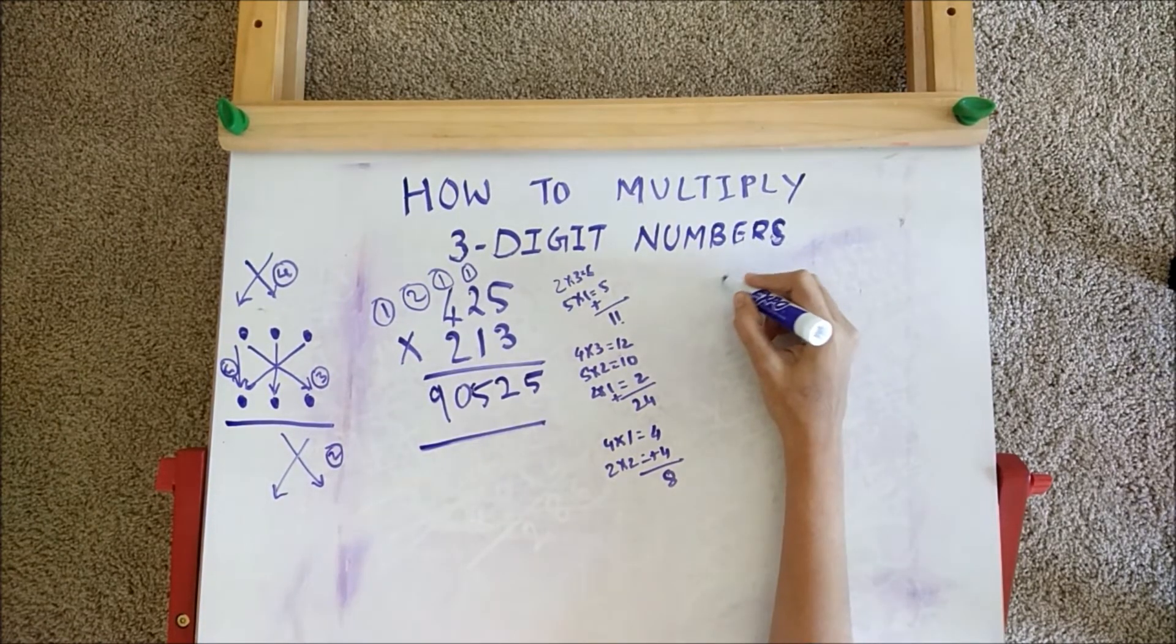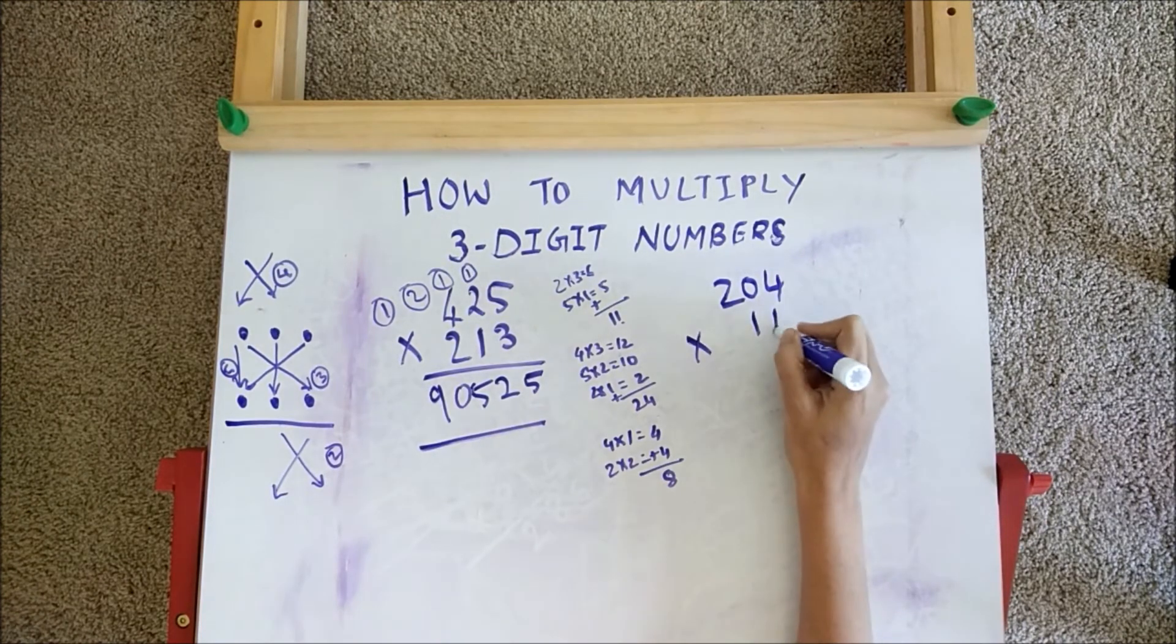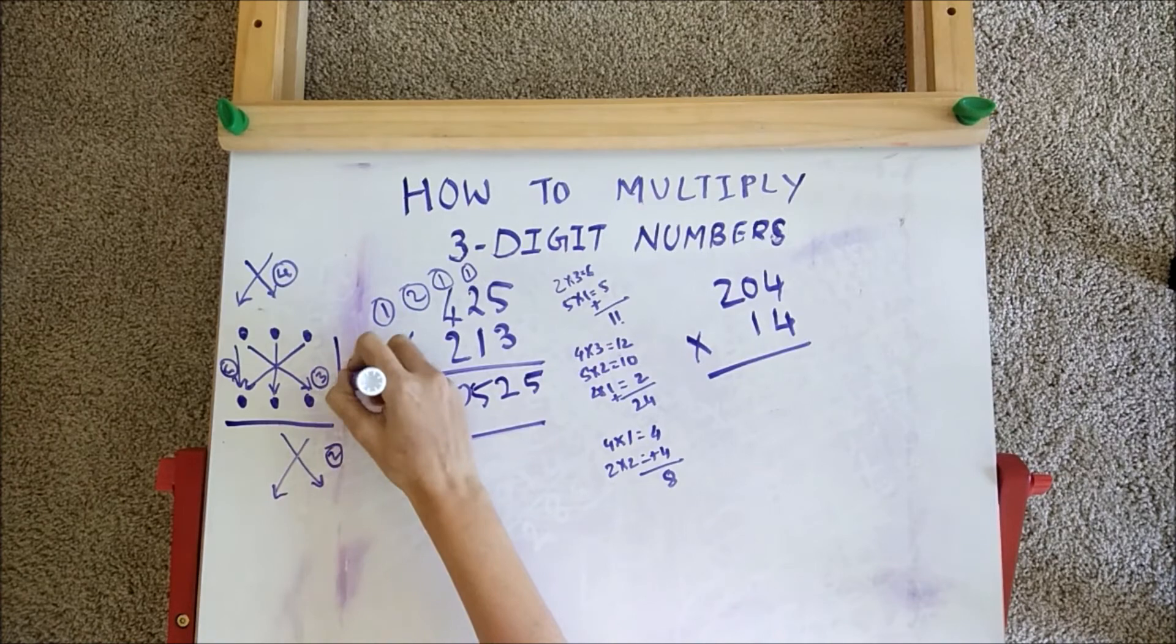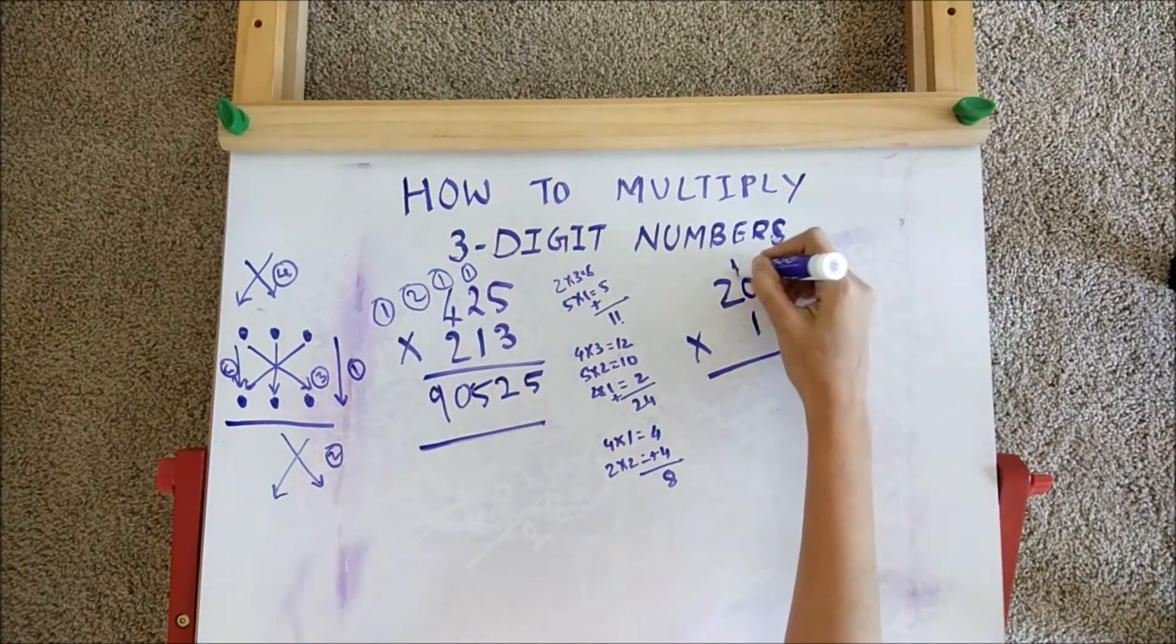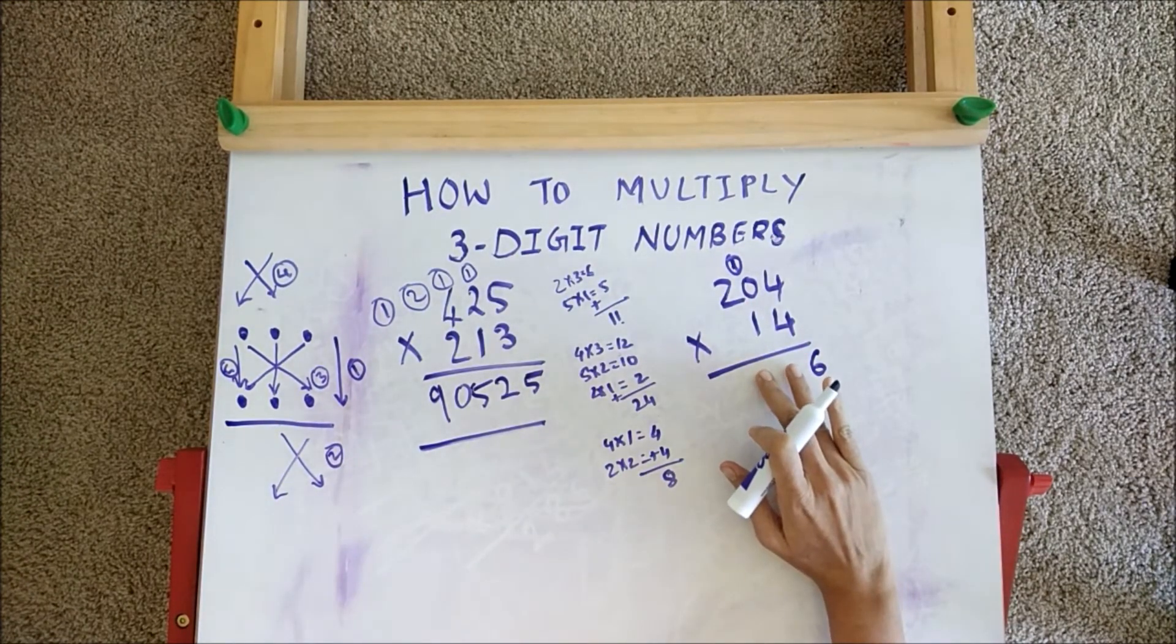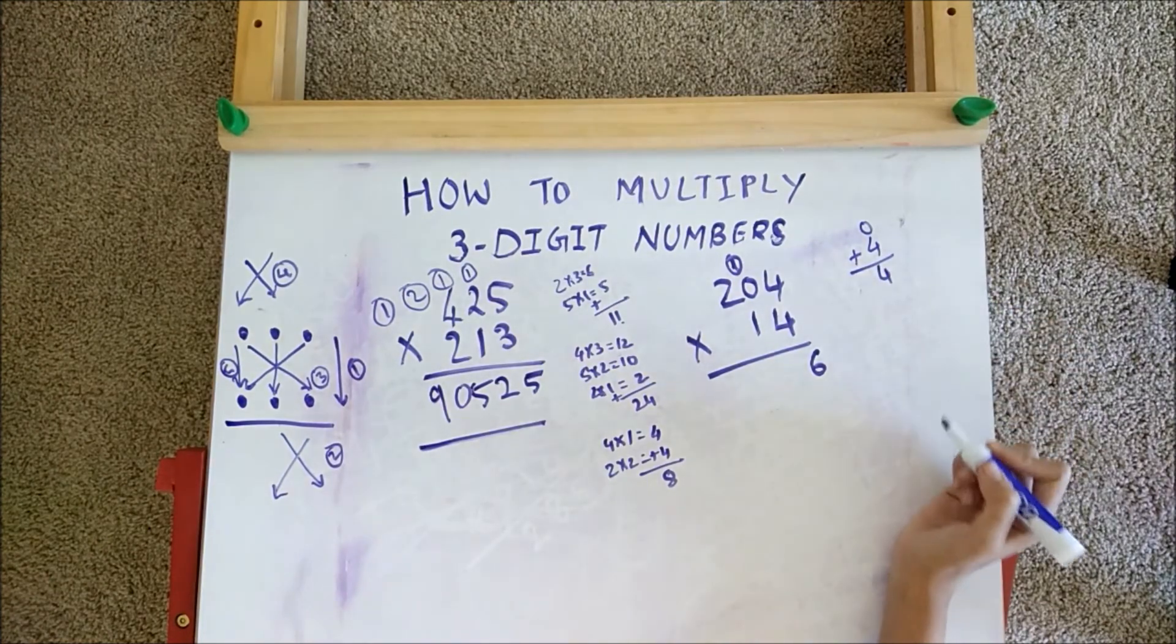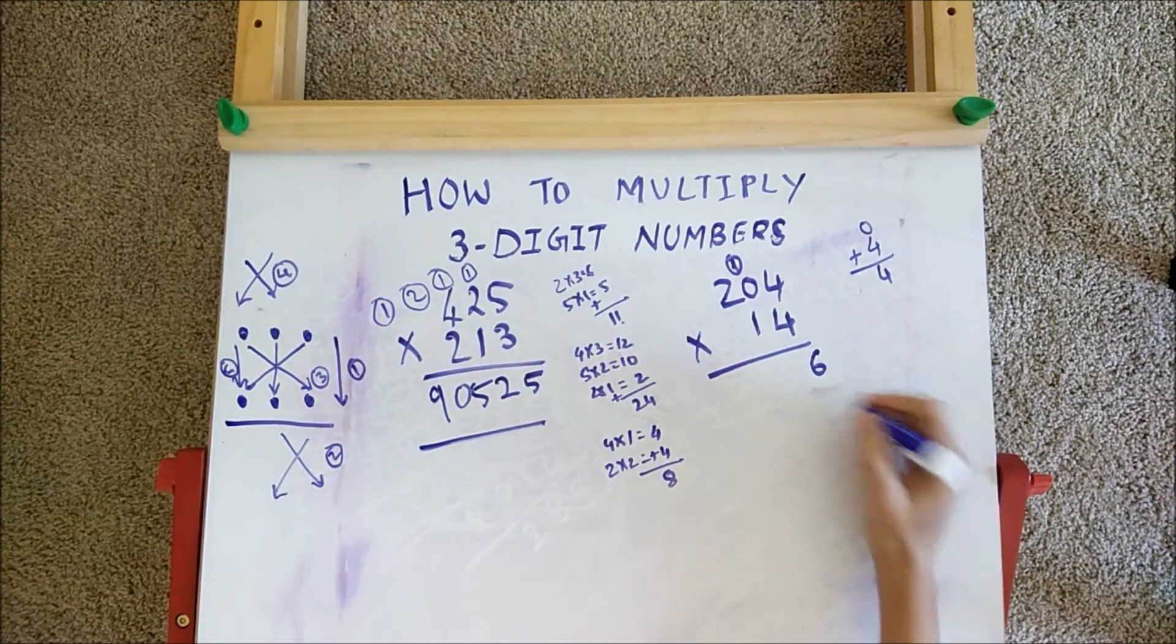For example, 204 into 14. In the first step we multiply the numbers at the unit place. So 4 times 4 is 16. Write 6, carry 1. In step 2, we cross multiply these two digits. So 0 times 4 is 0 and 4 times 1 is 4. Adding those we get 4, and plus 1 from the previous multiplication, so it is 5.